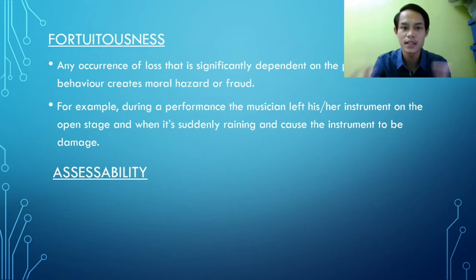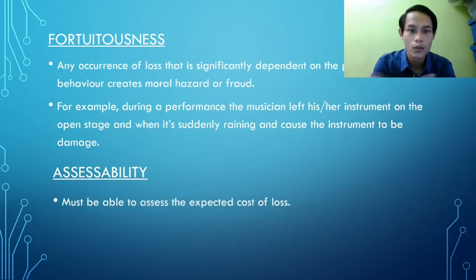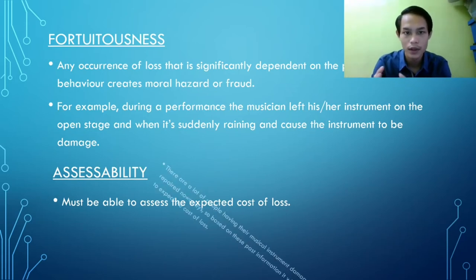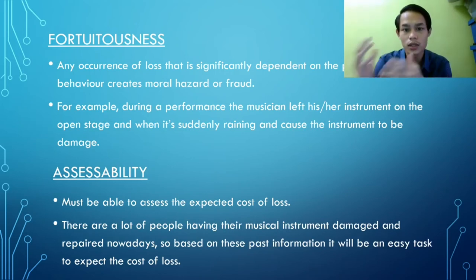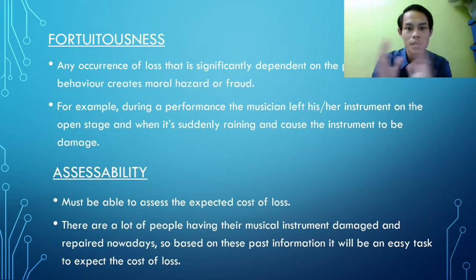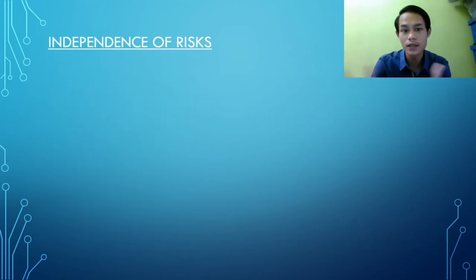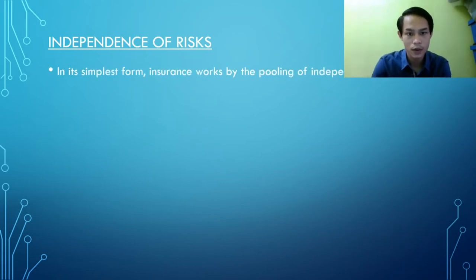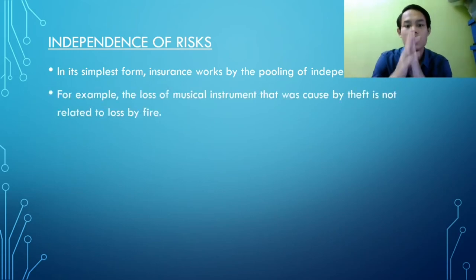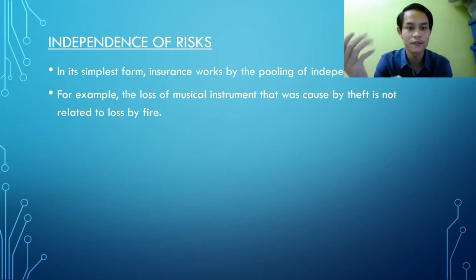Next is accessibility. We must be able to assess the expected cost of loss. There are many people having their musical instruments damaged and repaired nowadays, so based on this past information it will be easy to estimate the cost of loss. The next one is independence of risk. In its simplest form, insurance works by the pooling of independent risks — for example, the loss of a musical instrument caused by theft is not related to a loss by fire.